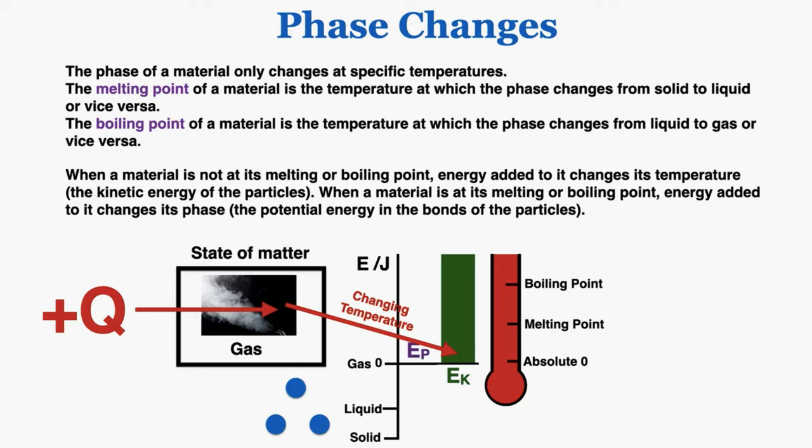That was a lot. We're going to be circling back to this concept in the next few videos as we get a better and better idea of how to describe this process. It's really important that you have that overview: a material only changes its phase at the melting or boiling point, and all energy added goes into changing its phase at those points. Anywhere outside those two specific temperatures, all the energy goes into changing the temperature rather than the phase.